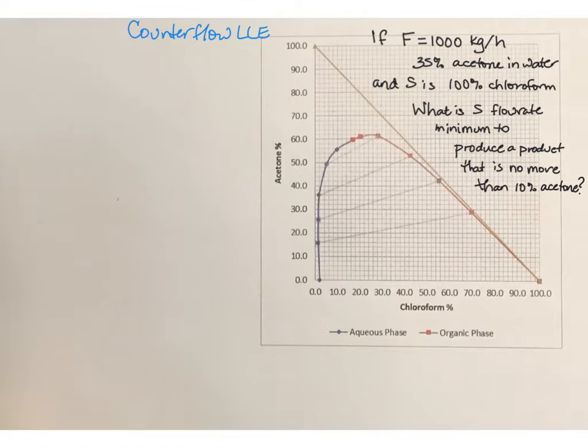In this case I've got a flow rate of 1,000 kilograms per hour that's 35 percent acetone in water and the solvent is going to be 100 percent chloroform. What I want to know is what will be the minimum flow rate for the solvent that will produce a product that's no more than 10 percent acetone.